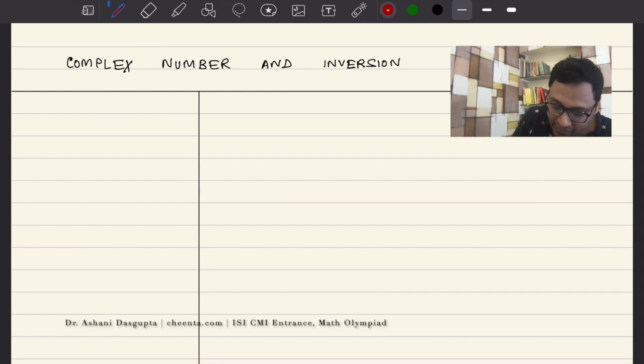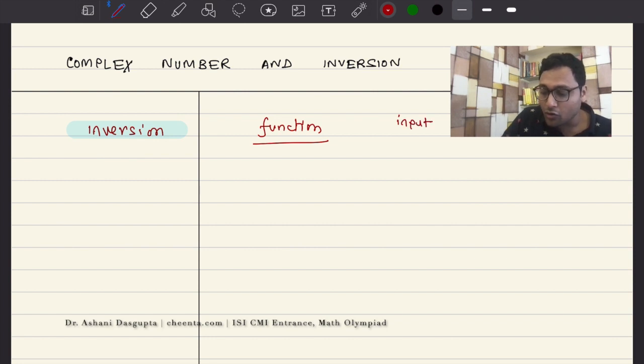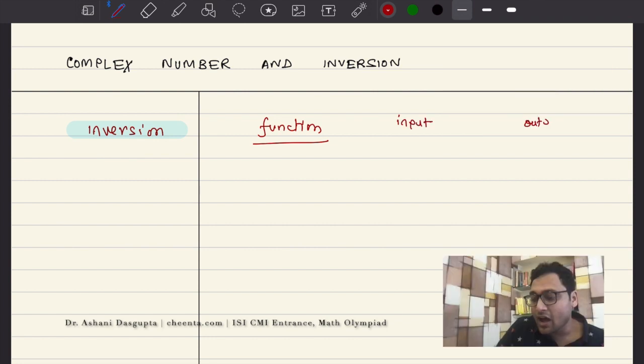Let's start with inversion. If you have seen it before, that's great. If not, here is a quick introduction to it. What is inversion? It's a function. Function means it will have input values or domain and output values or range, right? So both of them are points on the plane.